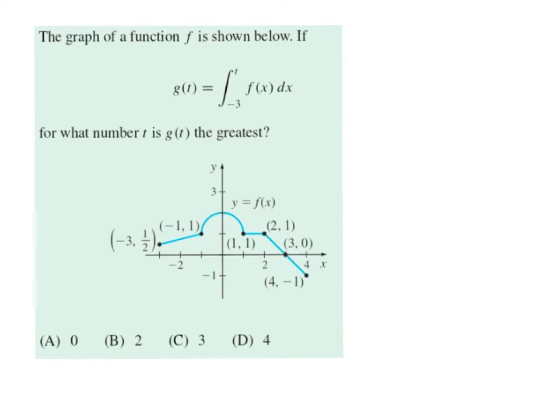All right. So the graph of f is shown below. If g(t) equals the integral from -3 to t of f(x)dx, for what number t is g(t) the greatest? All right. So this is a little tricky, but this is super important. We're going to do a bazillion of these to the point where you're going to get really annoyed. All right. What's the relationship between g and f? Well, remember, we have this. If we take the derivative of both sides, what do we get? g prime of t equals f(t).